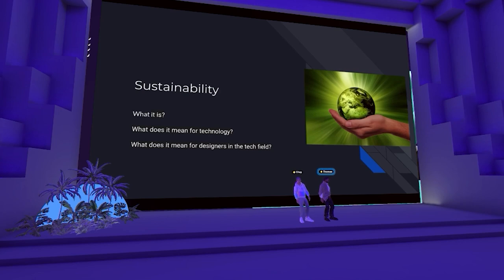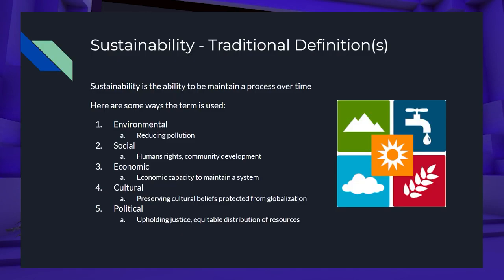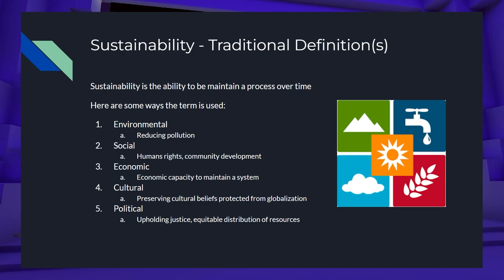What is sustainability? What does it mean for technology, and what does it mean for designers in the tech field? Here are some traditional definitions. Sustainability is the ability to maintain a process over time — in the environmental context, like reducing pollution; in the social context, for human rights and developing communities; economic sustainability is the capacity to maintain an economic system; cultural sustainability is preserving cultural beliefs or traditions from globalization; and political sustainability is upholding justice and equitable distribution of resources.